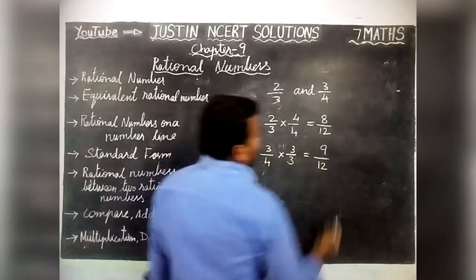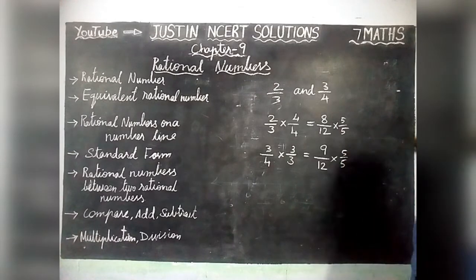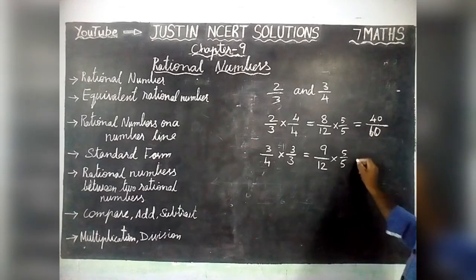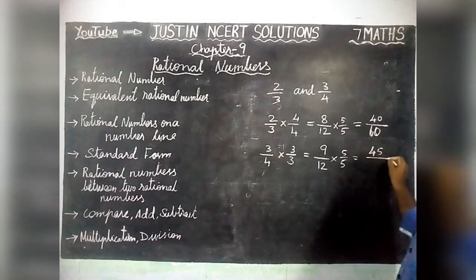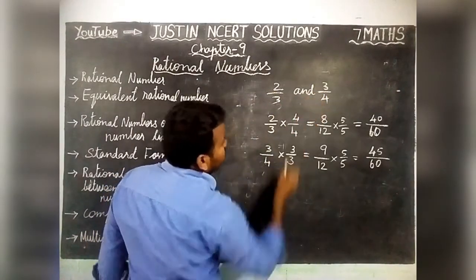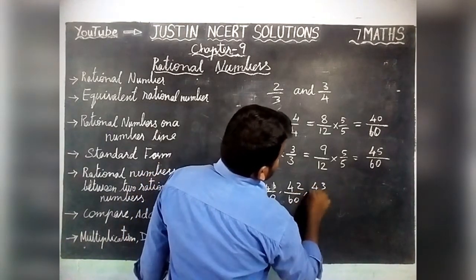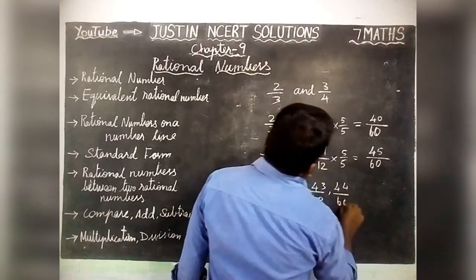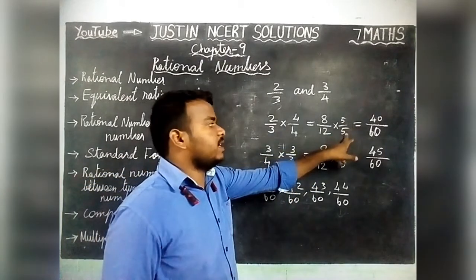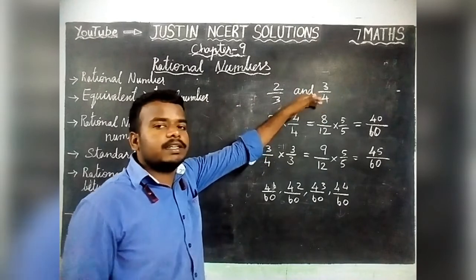To get more numbers in between, we further multiply both by 5 by 5: 8 by 12 becomes 40 by 60, and 9 by 12 becomes 45 by 60. Now denominators are common. Between 40 by 60 and 45 by 60, we have 41 by 60, 42 by 60, 43 by 60, and 44 by 60. These numbers are in between the two rational numbers, and that is not limited — multiplying by 6, you get 6 numbers; multiplying by 100, you get 100 rational numbers. Unlimited rational numbers are available between any two rational numbers.